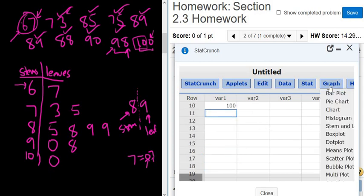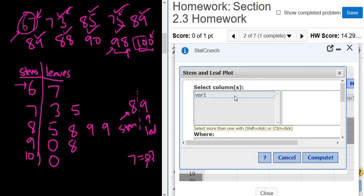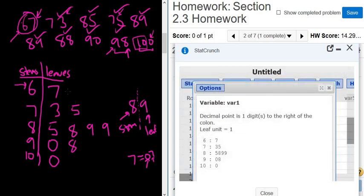And then you go to graph, stem and leaf. So graph, stem and leaf. You left click, pick var 1, and then just click compute.